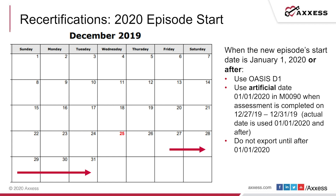You've had to register for the new iKeys updated portal that's ready for PDGM. If we try to export the OASIS D1 before January 1st, that portal is not compatible. So you'll have to use the artificial date 1-1-2020 when completing that recert somewhere between 12-27 and 12-31, and then hold those OASIS until after January 1st to export them.